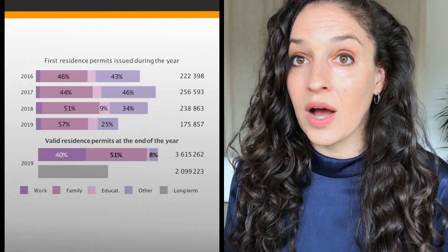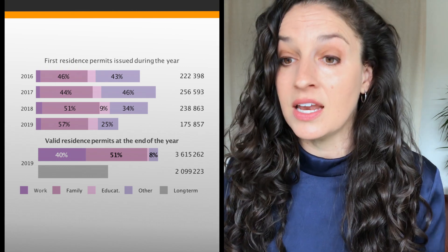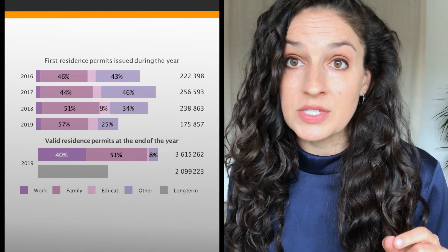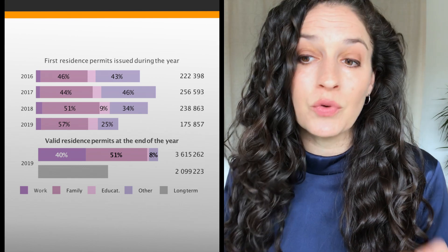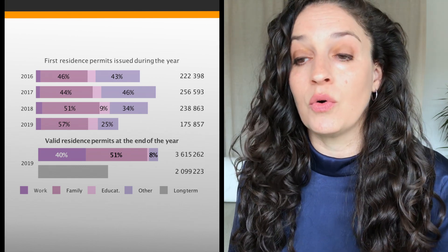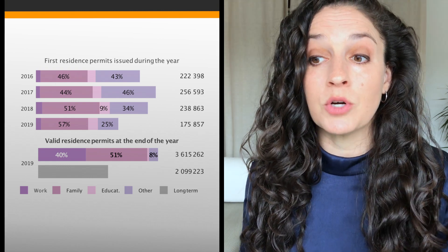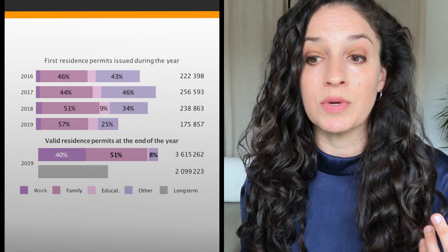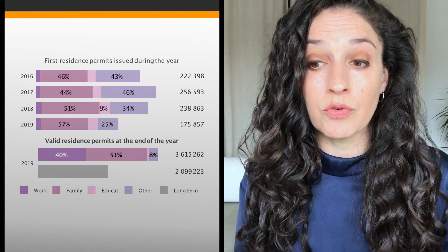Now let's look at residence permits, which are mainly for non-European immigrants. We can see the different reasons why people received their first residence permit between 2016 and 2019. Family residence permits — for family reunification or family formation — are very strongly represented, with some for educational purposes and quite a lot for other reasons such as seeking asylum or receiving refugee status. If we look at valid residence permits at the end of the year, work reasons take on more importance: around 40% for work, 51% for family reasons, and only 8% for other reasons.